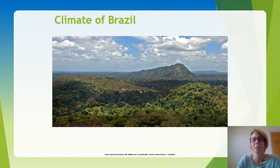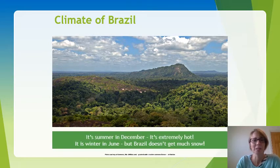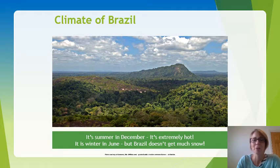The climate zone of Brazil is the tropical zone, where the tropical rainforests are. In summer — December — it is extremely hot, and in winter — June — temperatures are lower but still warm.